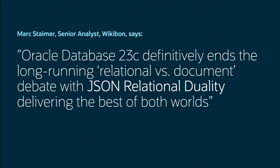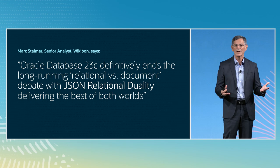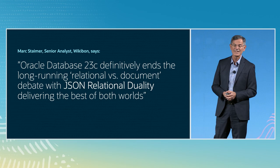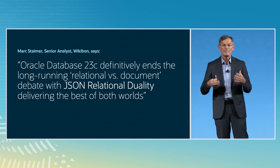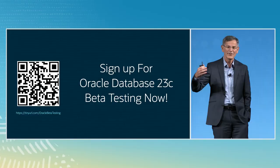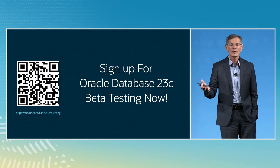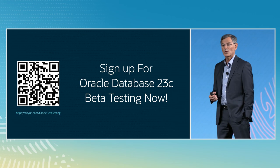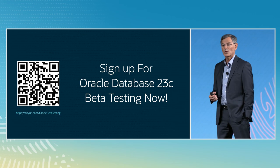To close with a quote from Mark Stamer of Wikibon: Oracle Database 23C definitively ends the long-running relational versus document debate. With JSON Relational Duality, we're delivering the best of both worlds. Thank you very much for joining me today. I think this is a really big deal — it's not just an Oracle feature; this is going to change the way developers work, and this technology will be adopted by many other products in the industry as well. You can sign up to try this today with our 23C beta available now at the link shown.